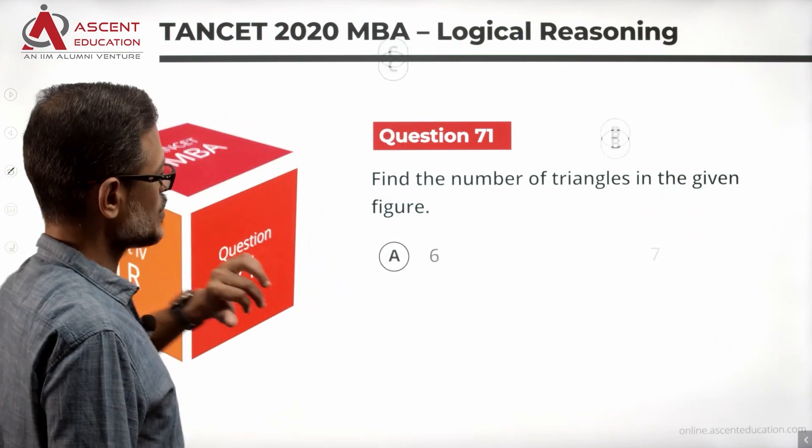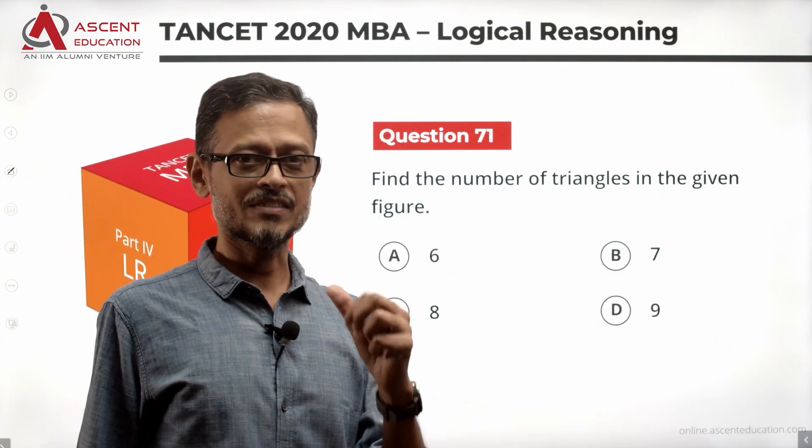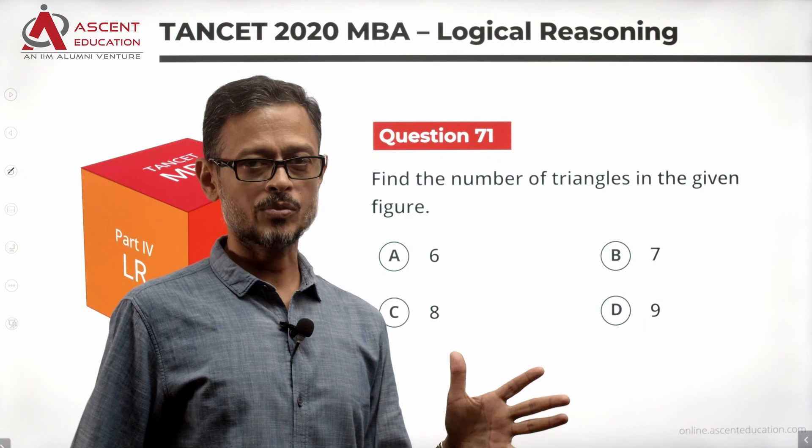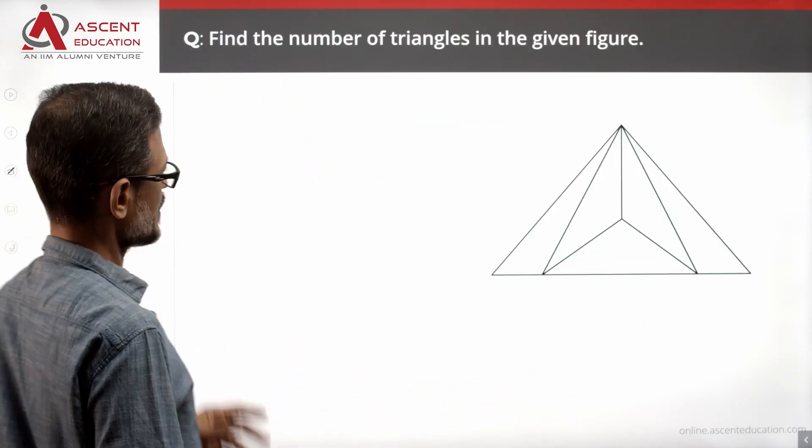Obviously, there is one correct answer. But quite often, that is the correct answer. Where, I don't know. Six, seven, eight, nine - four answer options. Let's count the number of triangles.